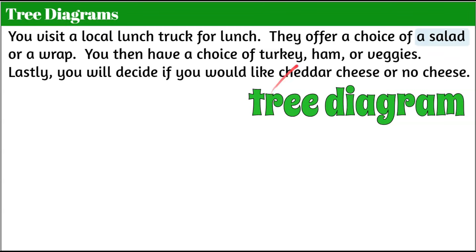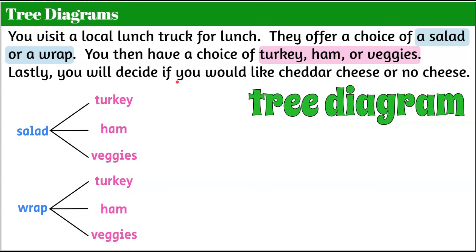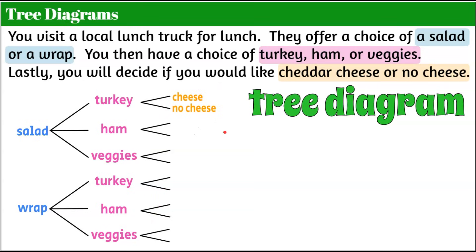We're going to make our tree diagram by looking at our first event: do we want a salad or a wrap? So we list salad and wrap — that's our first branch. Our second event is choosing turkey, ham, or veggies, so that's three choices. Three branches off salad and three branches off the wrap: salad with turkey, salad with ham, or salad with veggies; and a turkey wrap, ham wrap, or veggie wrap. Our third and final event is cheddar cheese or no cheese. So after all of these, we add two more branches for our last event, adding in cheese or no cheese for each.